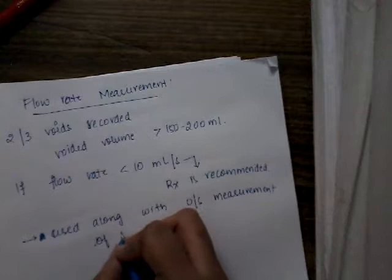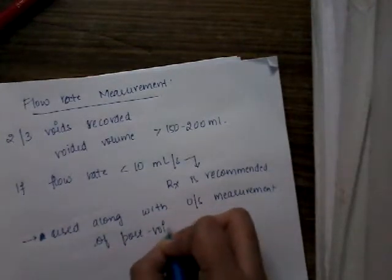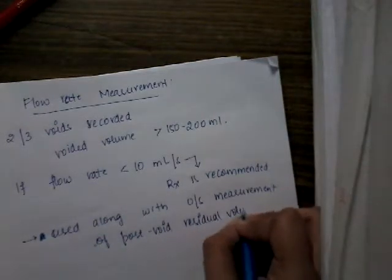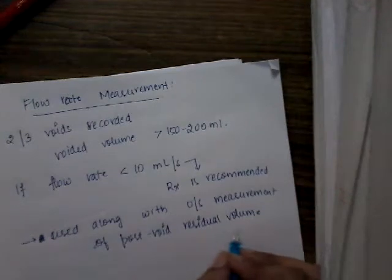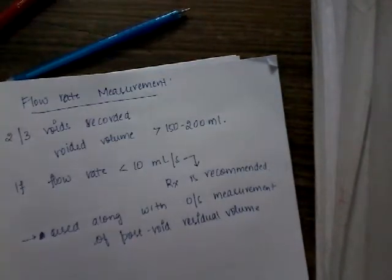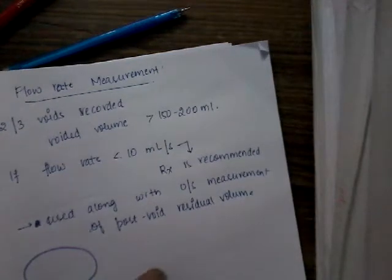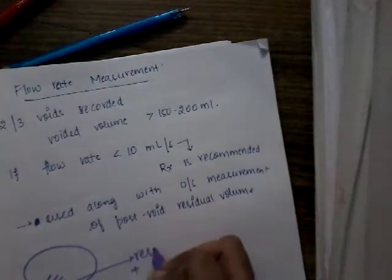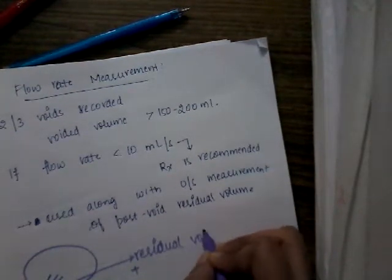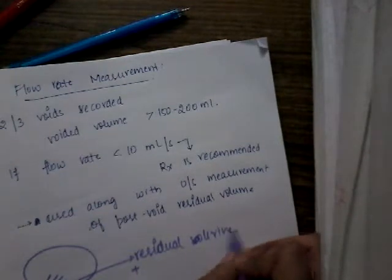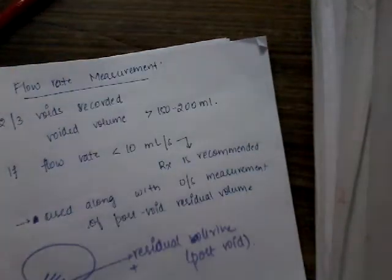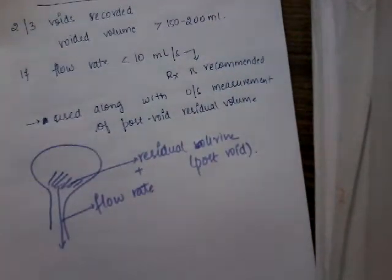Post void urine - after flow rate, how much urine is residual or left in the bladder is noted. First we measure the flow rate, and along with it we measure the residual urine after voiding. These two give us good information about bladder outflow obstruction.